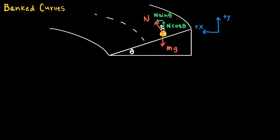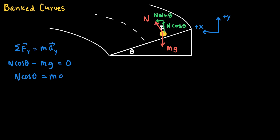Writing Newton's second law for the y direction: the net force in the y direction equals mass times acceleration in y. As long as the car is not moving towards the bottom or top of the road, the net force in y should be zero. So the upward force n·cosine theta minus the downward force mg equals zero, giving us n·cosine theta = mg. A component of the normal force supports the weight of the car as it travels along the road.